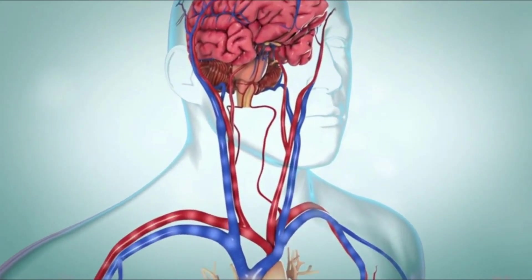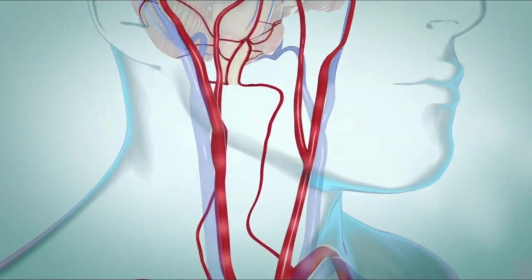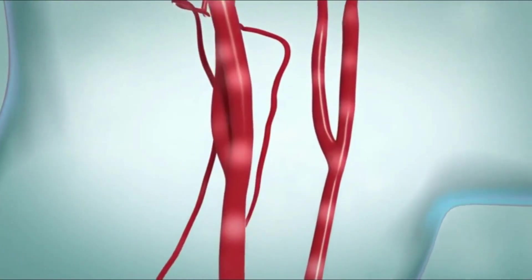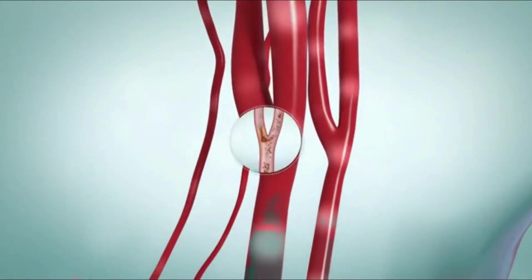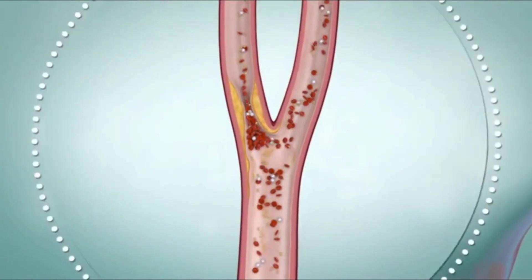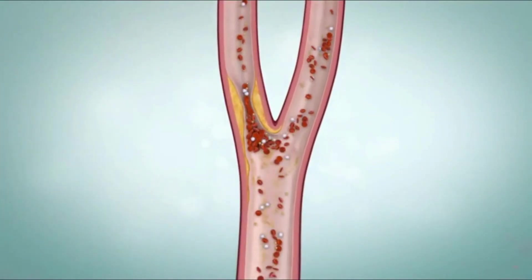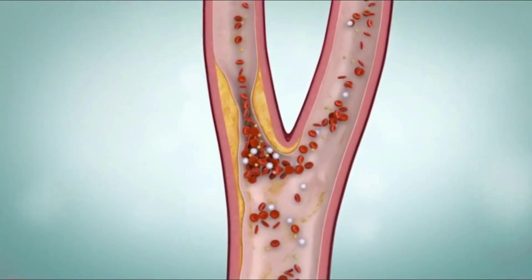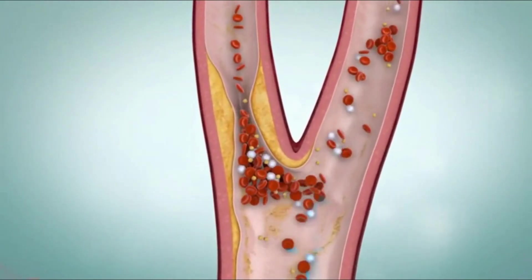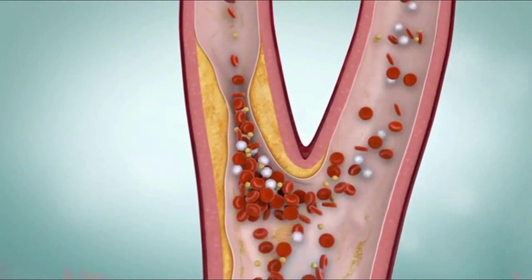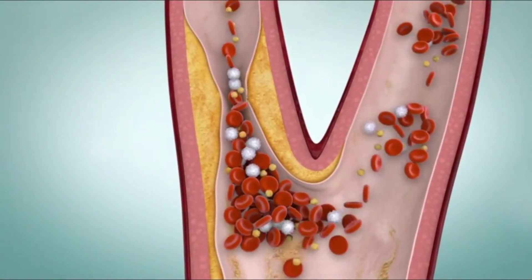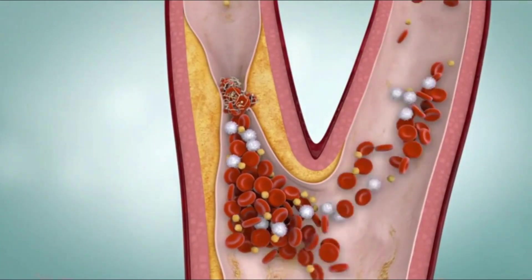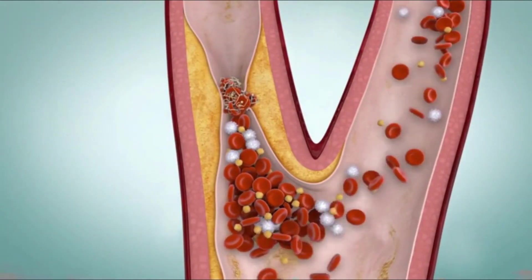Blocked arteries cause ischemic strokes. Arteries are the blood vessels that bring fresh blood and oxygen to the brain. Arteries can be blocked by a buildup of a fatty substance called plaque. Blood clots can also cause blockages, and they sometimes form in the area where the plaque has formed in the artery wall.